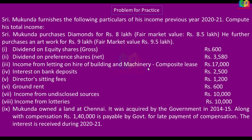Income from letting of building and machinery, interest on bank deposit, director sitting fee, ground rent, income from undisclosed source, and income from lottery are all examples of income from other sources.